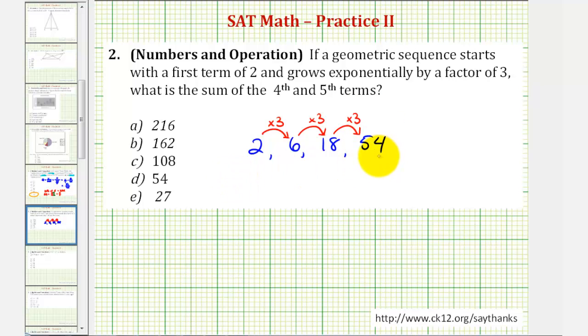Notice how we have the fourth term, so we only have to find one more term in the sequence. We'll multiply by three again. Fifty-four times three is equal to one hundred sixty-two.